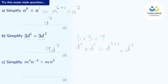Part C is very similar but with a little more going on. Let's do the same thing as we did in Part B and start with the m's. We've got m to the power of four multiplied by m — but that's actually m to the power of one, remember. The laws of indices tell me to add those powers, so it's m to the power of four plus one, which is m to the power of five.